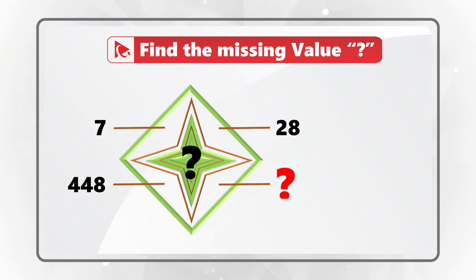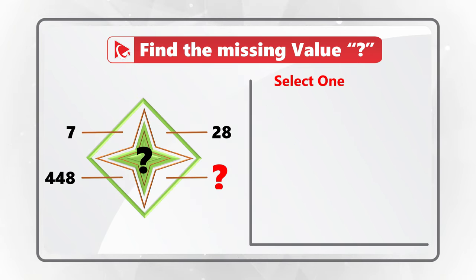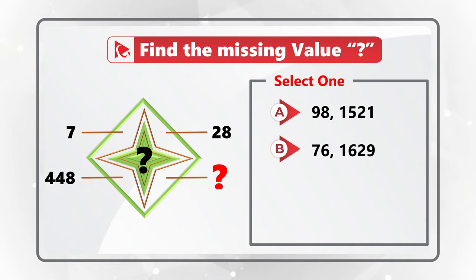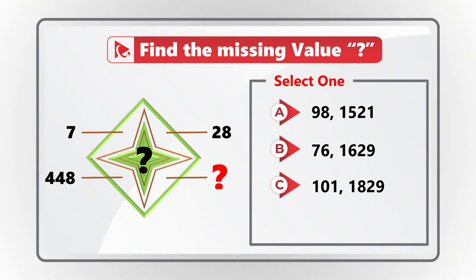You have four different choices for the final value. Choice A: 98 and 1521. Choice B: 76 and 1629. Choice C: 101 and 1829. And last but not least, Choice D: 112 and 1792.